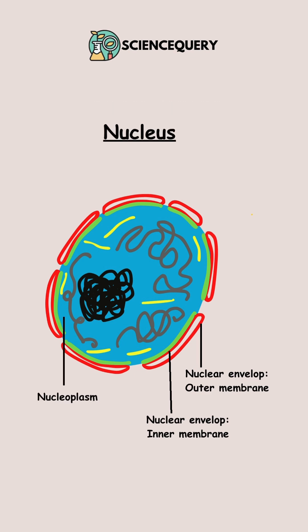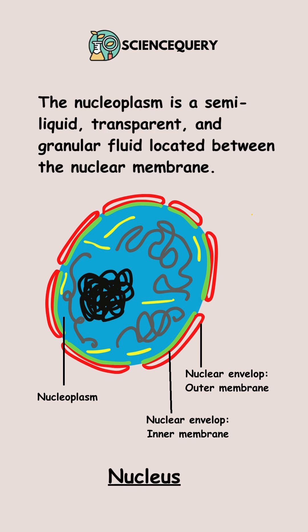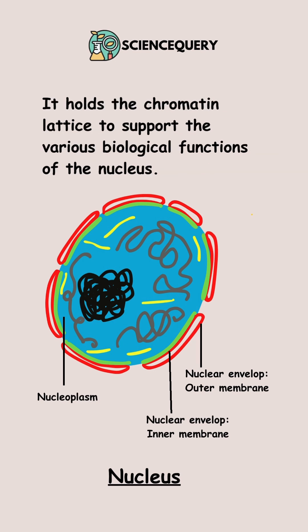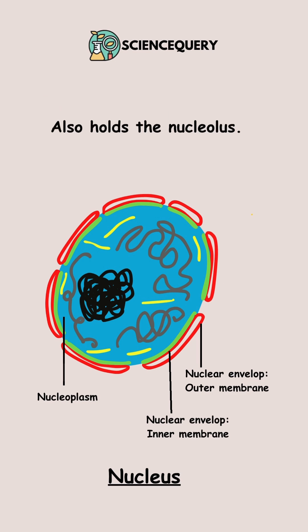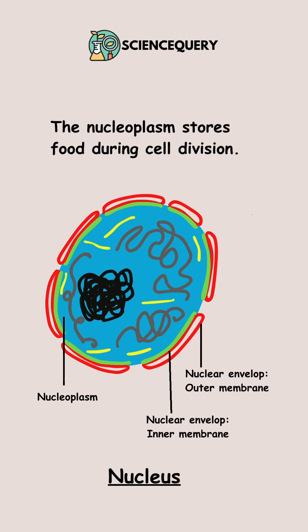Next is the nucleoplasm. The nucleoplasm is a semi-liquid, transparent, and granular fluid located between the nuclear membrane. It holds the chromatin lattice to support various biological functions of the nucleus, and it also holds the nucleolus. The nucleoplasm stores food during cell division.